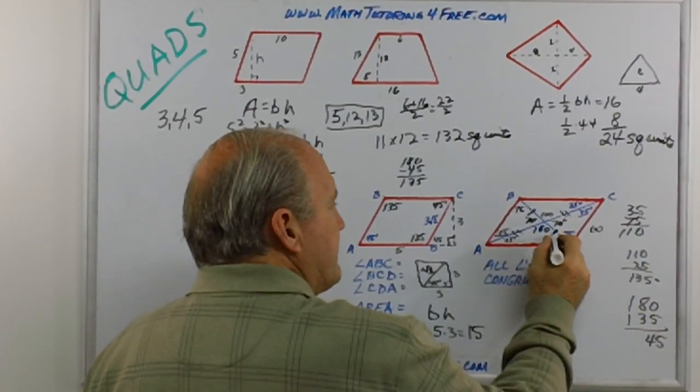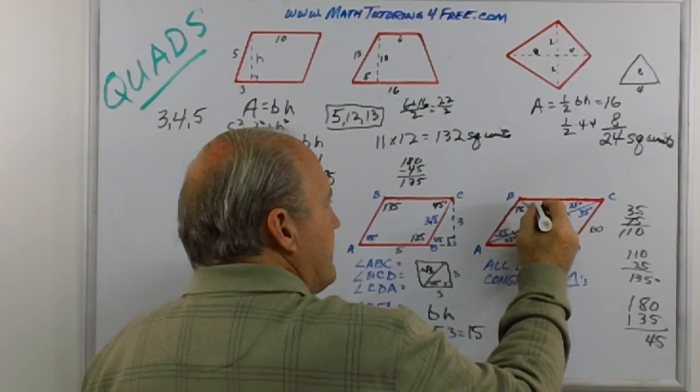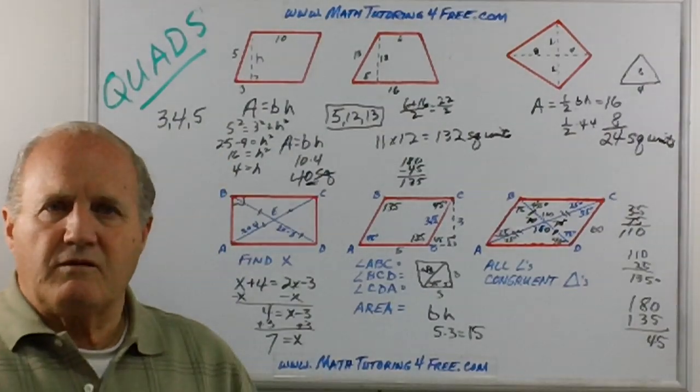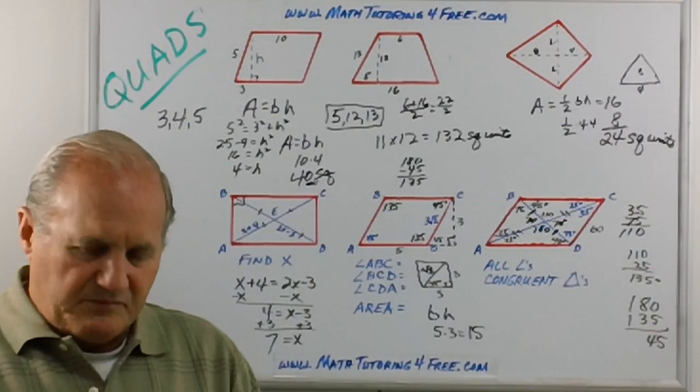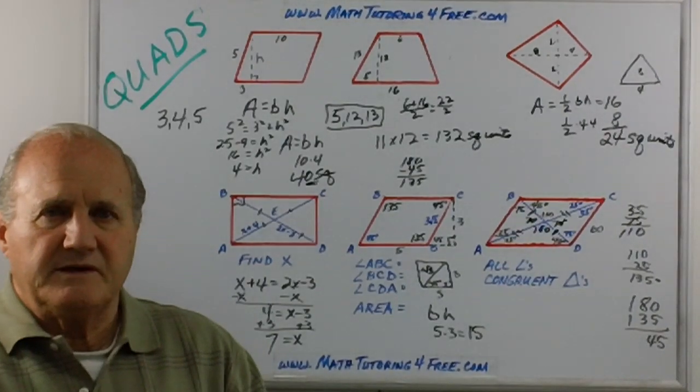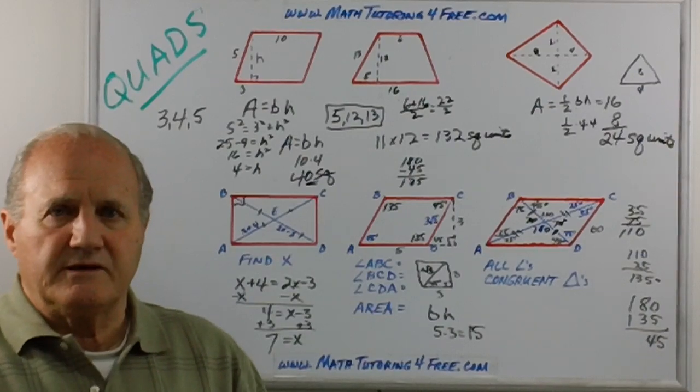So these final two are 45 degrees and 45 degrees. Again, quads, quadrilaterals are pretty—I hope you'll find them pretty easy. Mainly understand what happens with the diagonals and the angles.